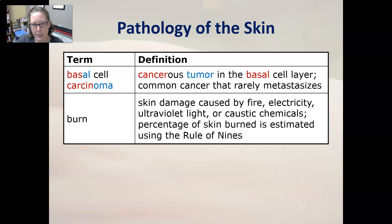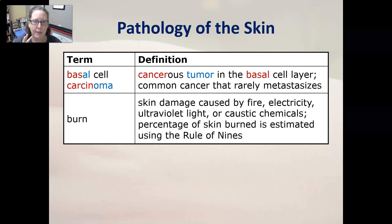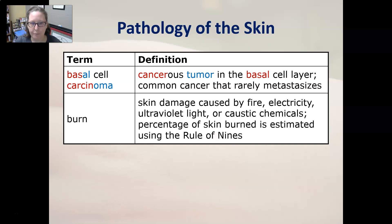Basal cell carcinoma is a cancerous tumor in the basal cell layer, which is the cell that is making the new skin cells. It is a common cancer that rarely metastasizes, meaning it rarely spreads beyond the skin.